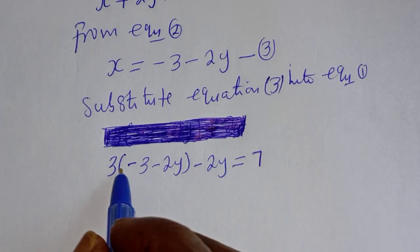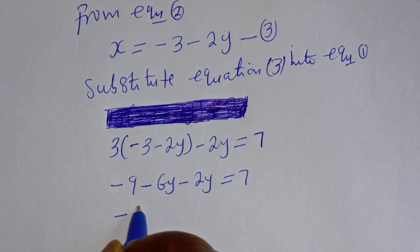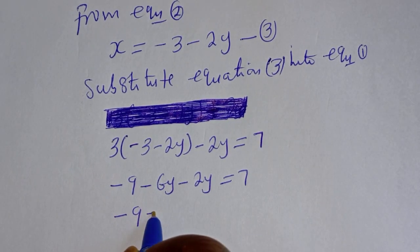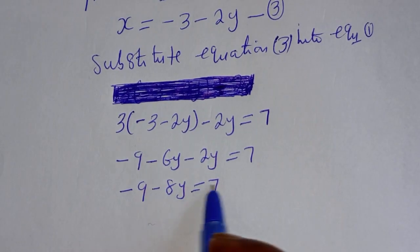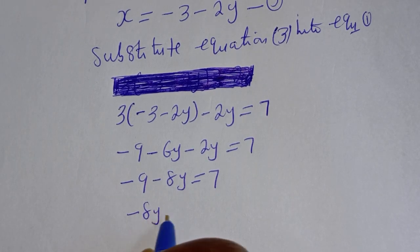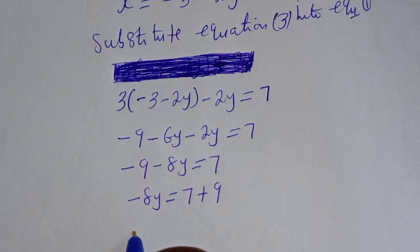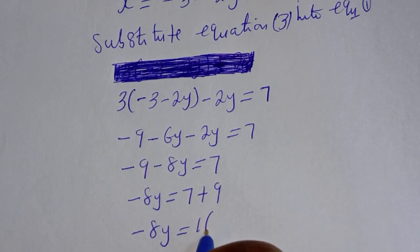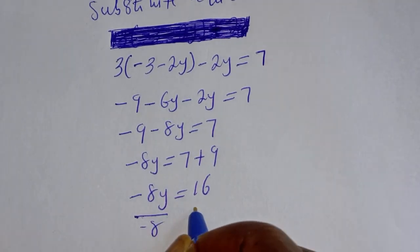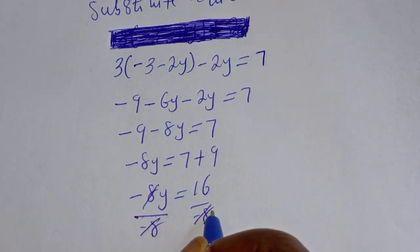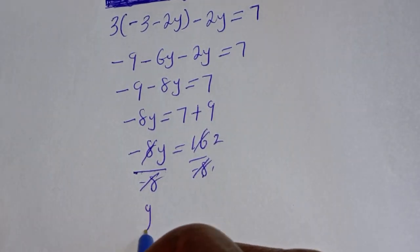Let's open the bracket: minus 9 minus 6y minus 2y is equal to 7. So minus 8y is equal to 7 plus 9. Minus 8y is equal to 16. We are looking for the value of y, so let's divide both sides by minus 8. This gives y is equal to minus 2.